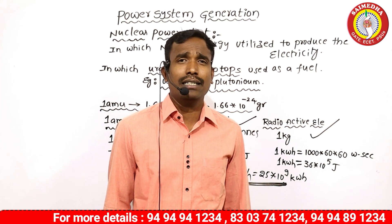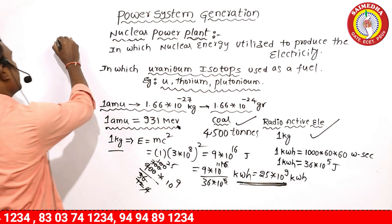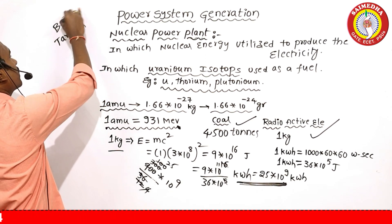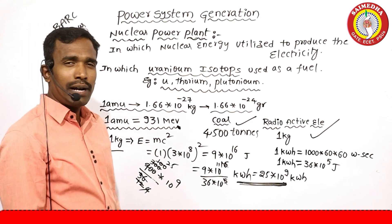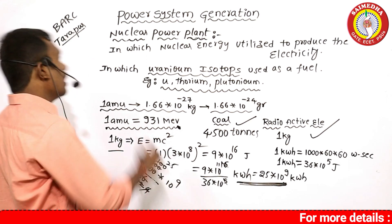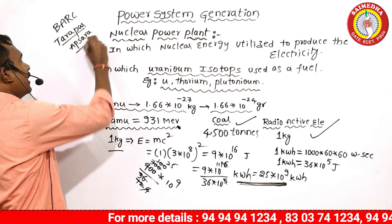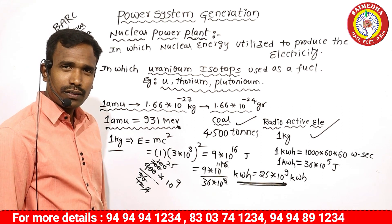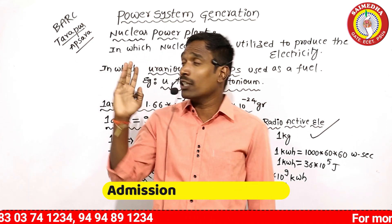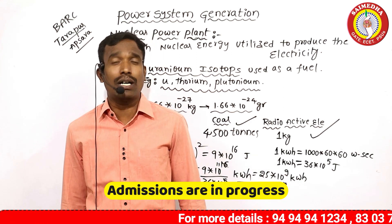The first nuclear power plant in India is at Tarapur. The first nuclear reactor is at Baba Atomic Research Centre (BARC), Mumbai. The first nuclear reactor's name is Apsara. At Tarapur, there are 4 nuclear reactors operating: 2 boiling water reactors and 2 pressurized water reactors.